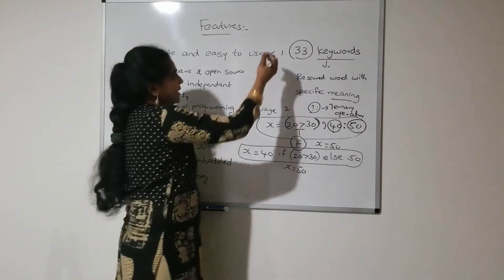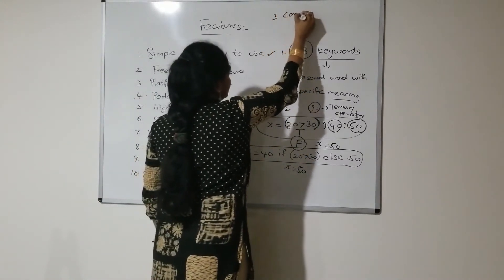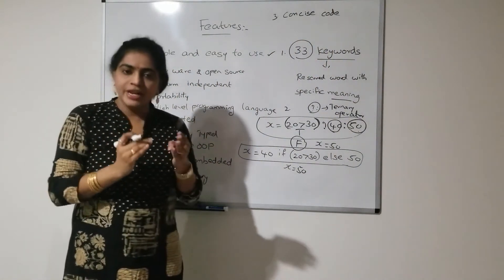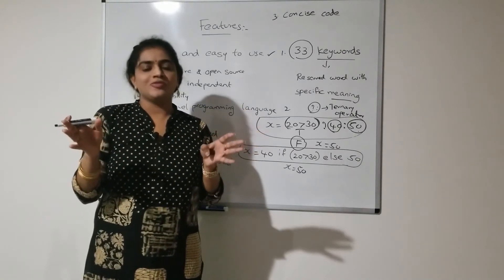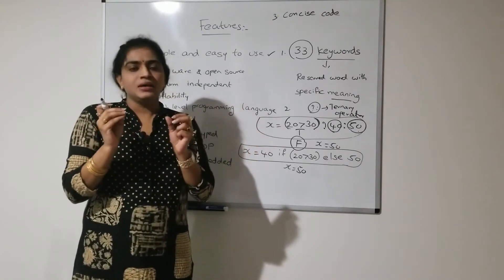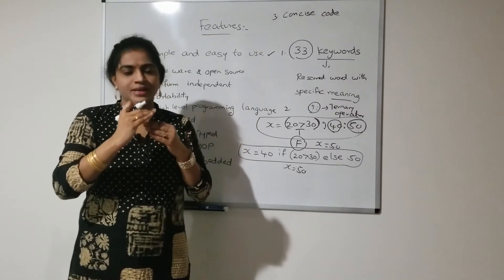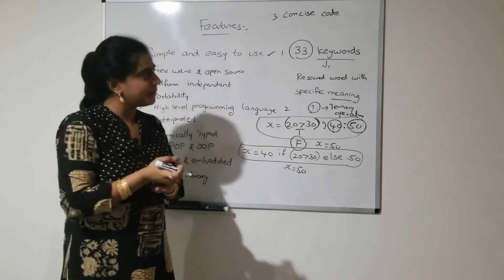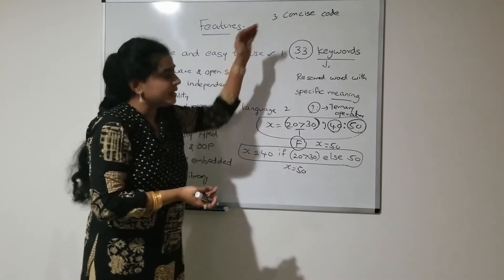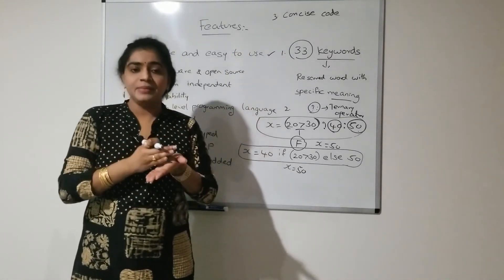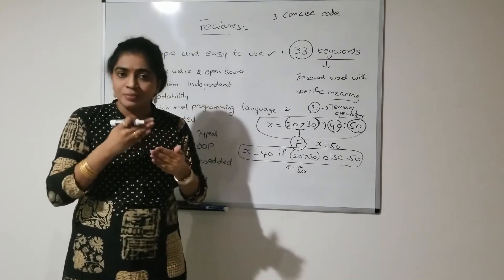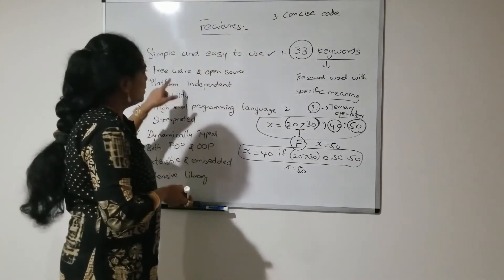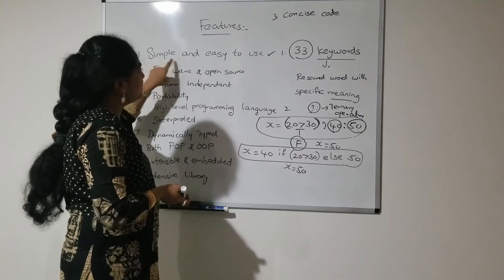And the next one is concise code. Concise code means less lines of code. To solve any application, there is no need to write more lines of code in Python — just with less lines of code we can solve the applications. Because of this concise code, development time is reduced and the cost of project development is also reduced. That is one of the features of Python — it is simple and easy to use.